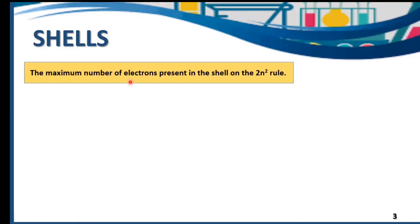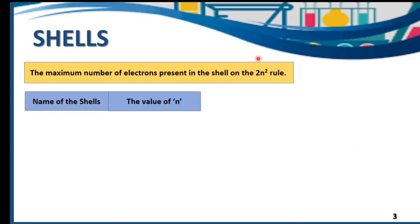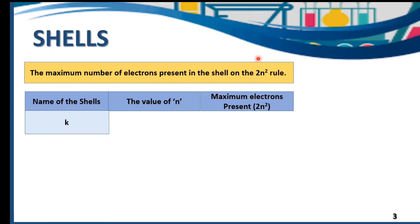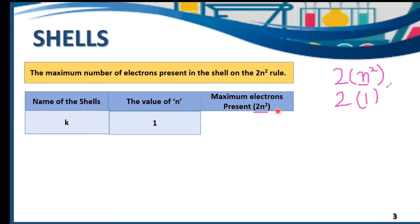The maximum number of electrons present in the shells depends upon the 2n² rule. We have the name of shells, the value of n, and the maximum number of electrons. For K shell, the value of n is 1. According to the formula 2n², we put 1 in place of n: 2 times 1 squared equals 2. So K shell can hold a maximum of 2 electrons.